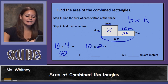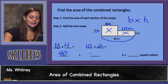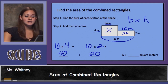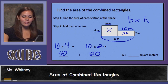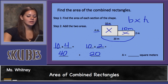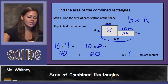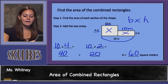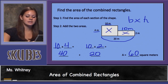So we'll multiply 10 times 2 to get 20 square meters. Step 2 tells us we need to add the two areas together: 40 plus 20 equals 60 square meters. The area of this entire shape is 60 square meters.